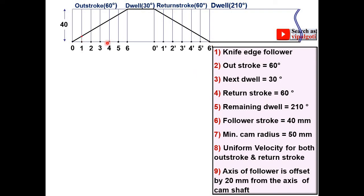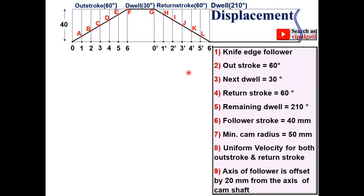Now mark the intersection points and give them names A, B, C, D, E, F. Similarly, mark the intersection points for the return stroke and name them G, H, I, J, K, L. This completes your displacement diagram.